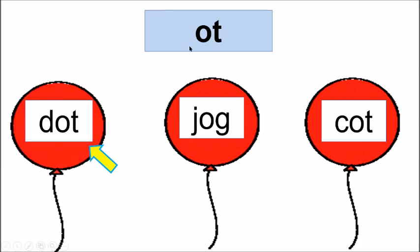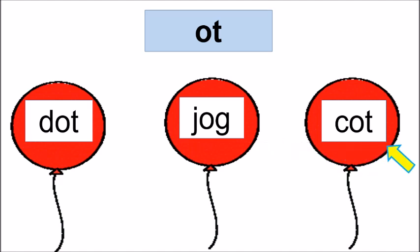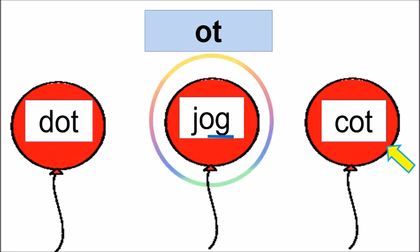Now we have next family — OT. Now read the first word, children — Dot. Read this word — Jog. Read the last word — Tot. Tell me, which word does not belong to the OT family? OT and Dot — rhyming. OT and Tot — rhyming. OT and Jog — are they rhyming, children? Jog belongs to the OG family. So OT and Jog are not rhyming. So this word is odd one out. So this balloon goes pop.